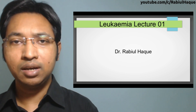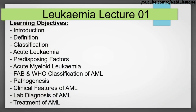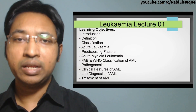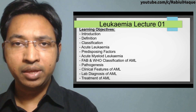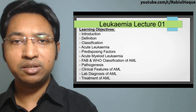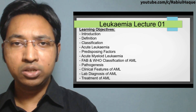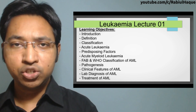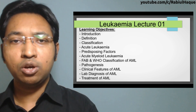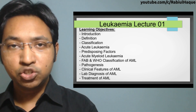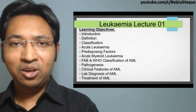Today's topic is on leukemia part one. In this lecture we will learn about introduction and definition of leukemia, its classification, what we mean by acute leukemia, its predisposing factors, and we will mainly focus on acute myeloid leukemia — its classifications, pathogenesis, clinical features, lab diagnosis, and treatment. In subsequent lectures we will cover other types of leukemia and I will also make an additional lecture on leukemoid reaction.